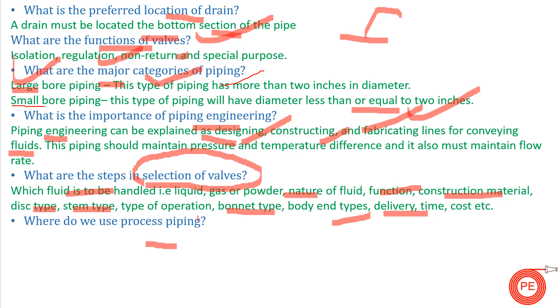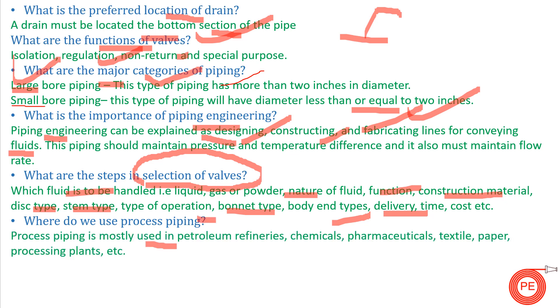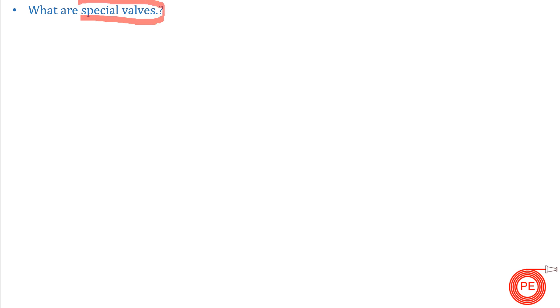The next question is: where do we use process piping? Process piping is used in petroleum refineries, chemicals, pharmaceuticals, textile, paper, and processing plants. All these industries fall under the category of process industry, and process piping is done in these types of industries.